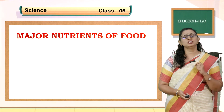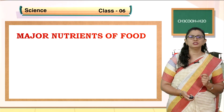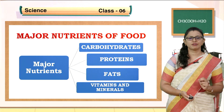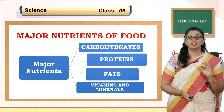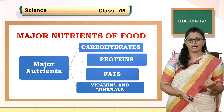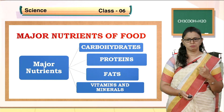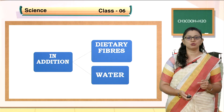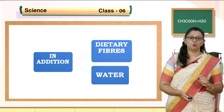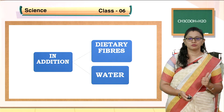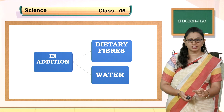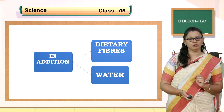Now we will study the major nutrients of food, also called constituents of food. We have major nutrients: carbohydrates, proteins, fats, vitamins and minerals - these are the major nutrients present in the food diet. In addition to this, we should also have dietary fibers, also called roughage, and water. You should know the terms carbohydrates, proteins, vitamins, minerals, fats, dietary fibers and water.